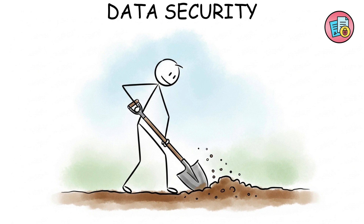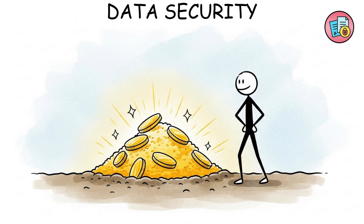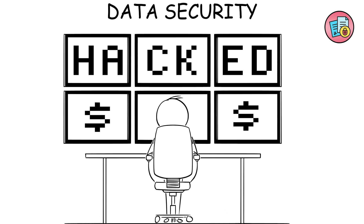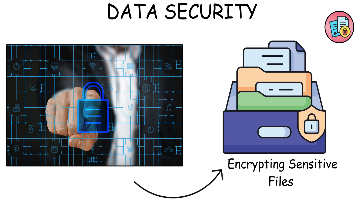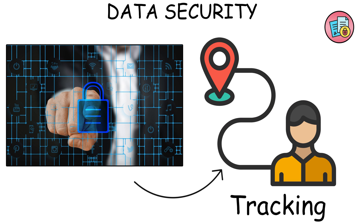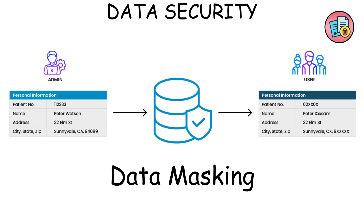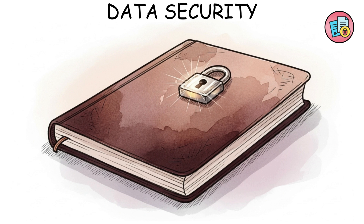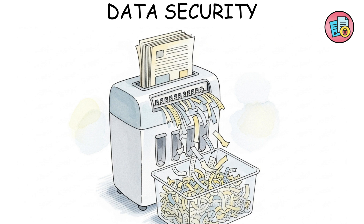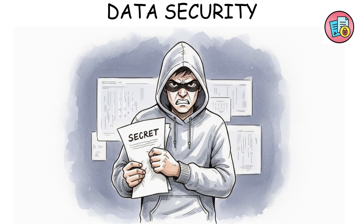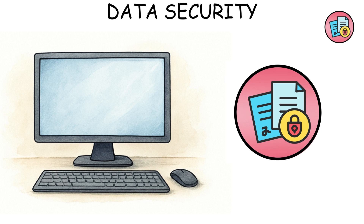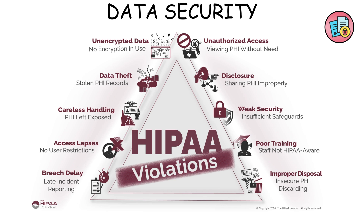Data security. Now we go deeper, protecting the core essence of cybersecurity — your data itself. It's not just about blocking hackers; it's about what happens if they get in. Data security means encrypting sensitive files, controlling access, and tracking who touches what. Techniques like data masking, hashing, and tokenization make stolen data useless to attackers. It's like locking your diary, shredding every copy, and replacing your real secrets with fake ones — even if someone breaks in, they learn nothing. In modern systems, this level often includes compliance rules like GDPR and HIPAA, ensuring privacy isn't optional. It's law.